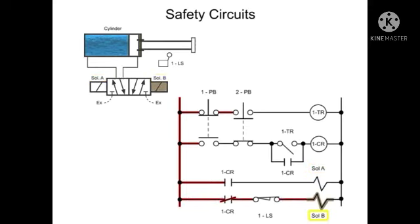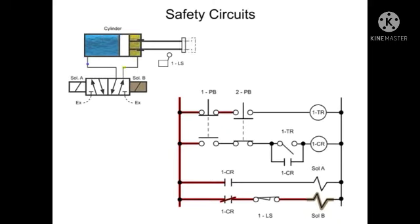This shifts the valve, allowing the rod end of the cylinder to fill with fluid and retract the cam. When the cylinder is fully retracted, the cam energizes and opens limit switch 1, which removes power from solenoid B.